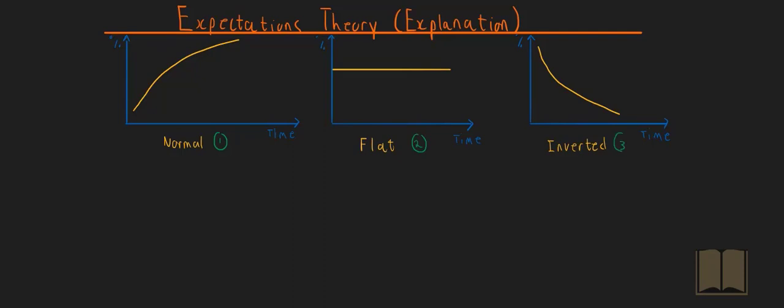And then the third yield curve, called an inverted yield curve, is when interest rates are expected to decrease in the future. The expectations theory can explain each of these three yield curves.